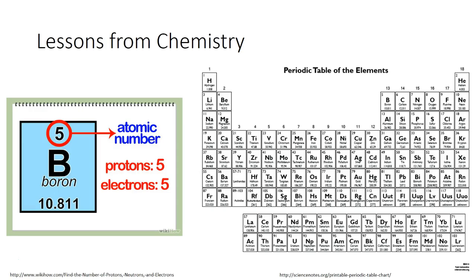Remember from chemistry that the atomic number of an element is the number of protons that the element contains. Unless the atom is an ion, the number of electrons is the same as the number of protons. Like boron, which normally has 5 protons and 5 electrons.